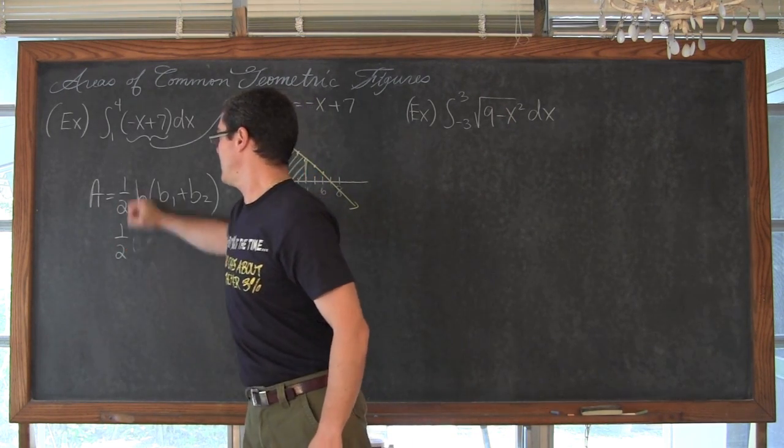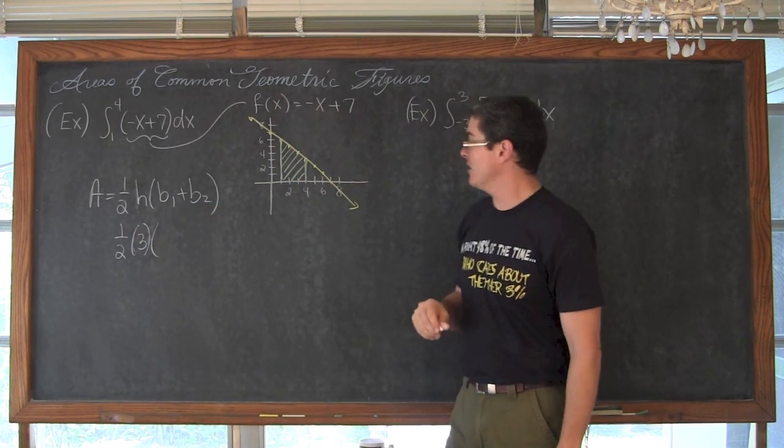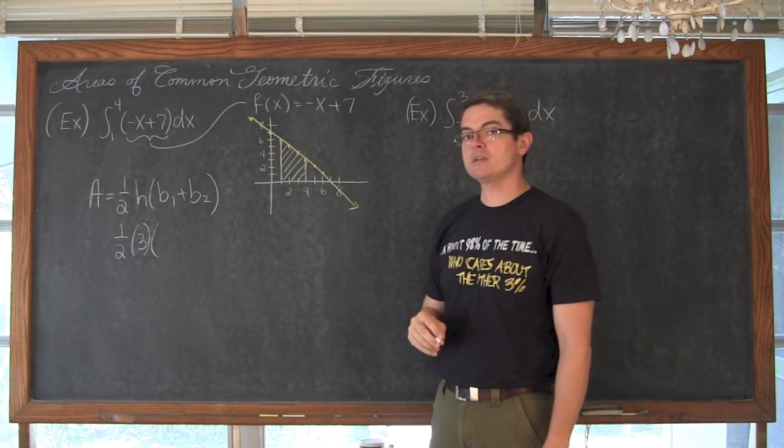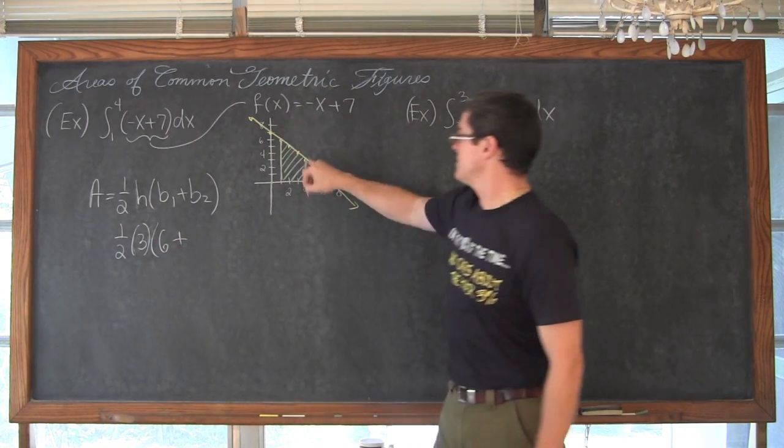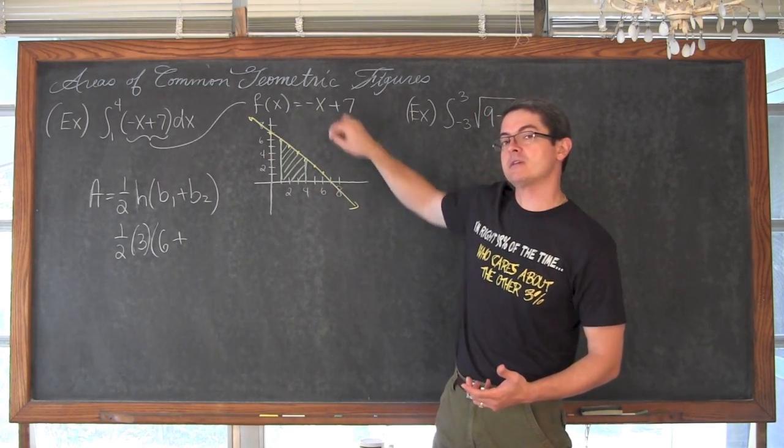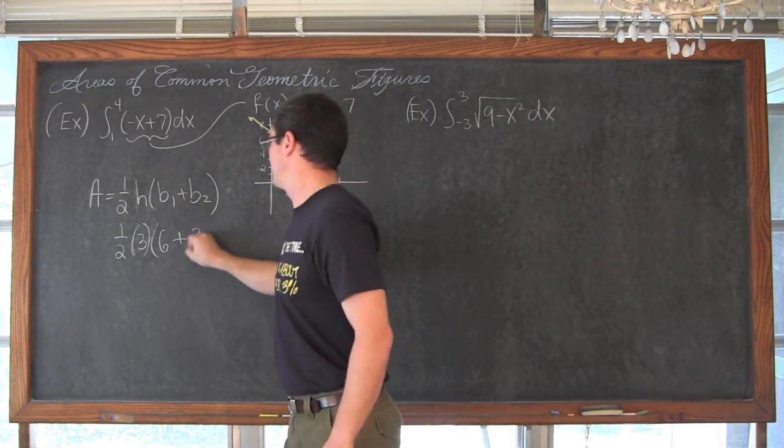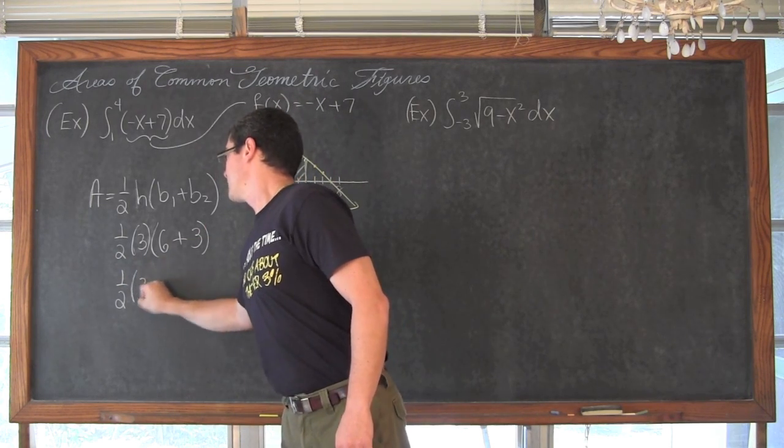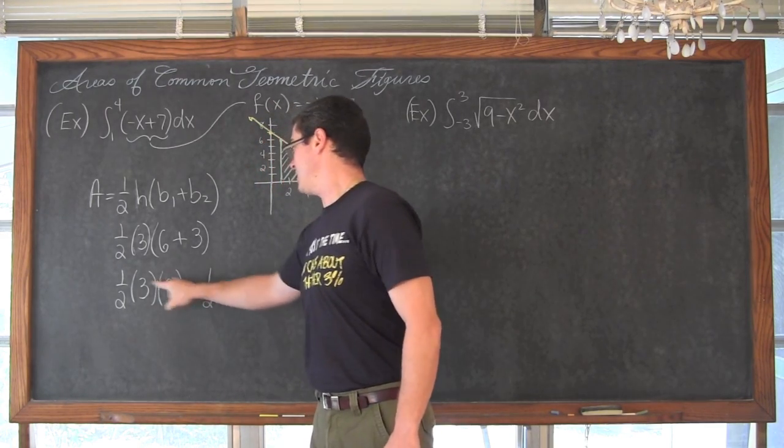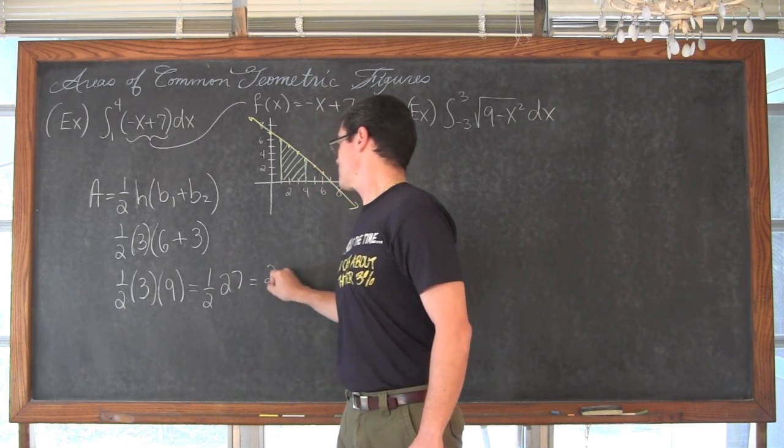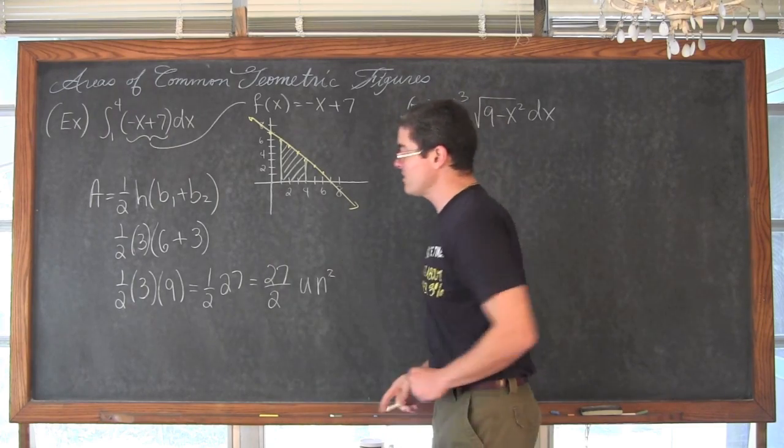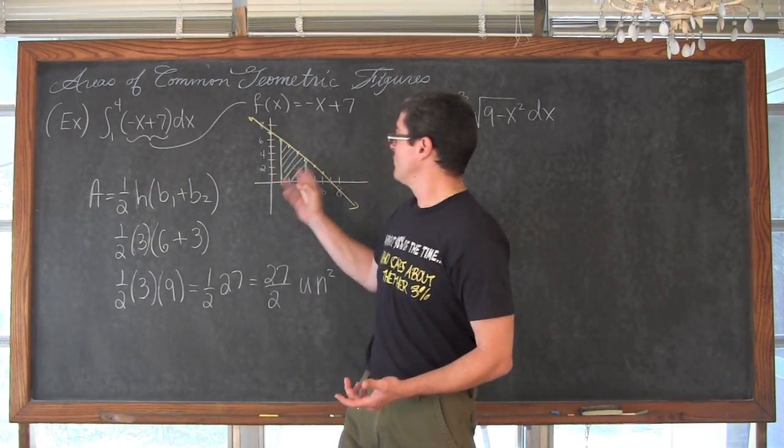And the bases, well let's see here. We go from, at this x value of 1, we have a y value of 0, and we go up to 6, so that is a height of 6, plus this height here. When we take the x value of 4, and we plug it into our function, negative 4 plus 7 equals 3, so that height equals 3. This is 1 half, 3 times 6 plus 3, which equals 9. And that is 1 half, 3 times 9 is 27. So of course we have 27 over 2 units squared for this definite integral, which is representing this area.